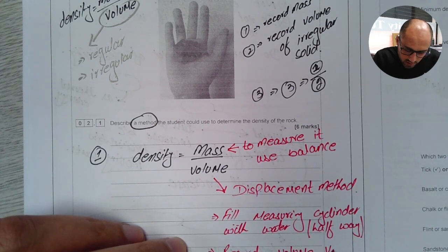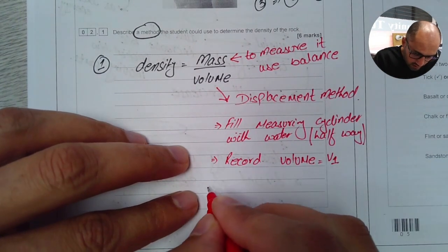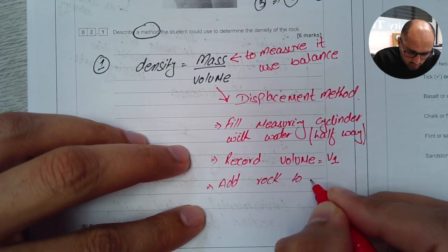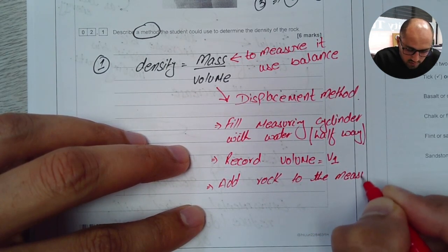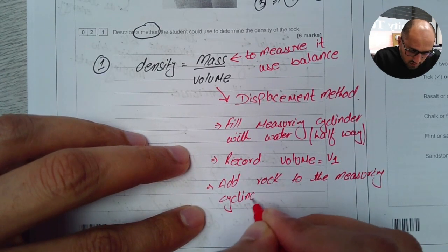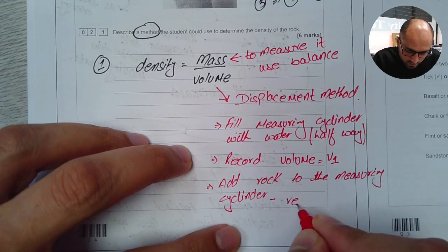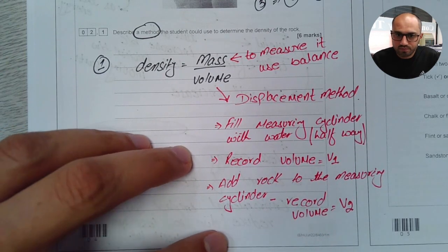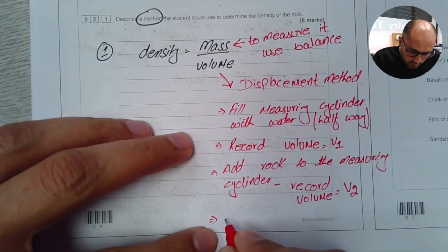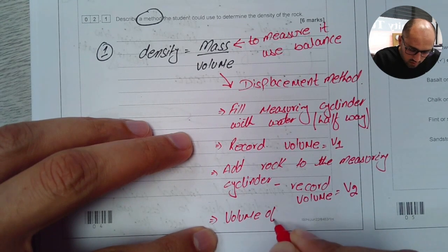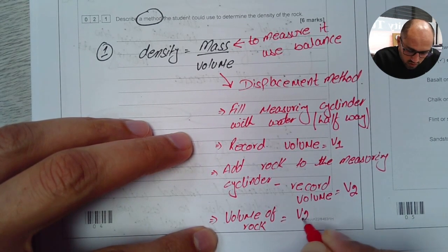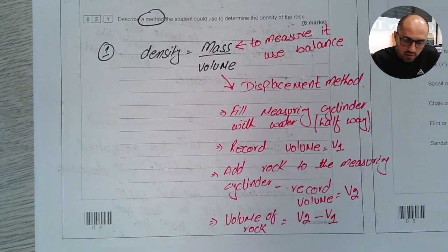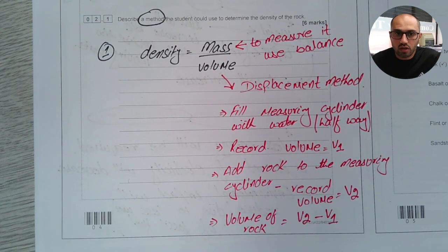This is my V1. Then I'll say add rock to the measuring cylinder. And then record volume again. This is my V2. Then I can say to find volume of rock, I'll have to do V2 take away V1. And then I've already told them that I'm going to divide the value of mass by the volume. And that would get us full marks on this question.